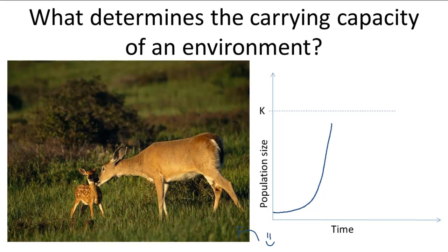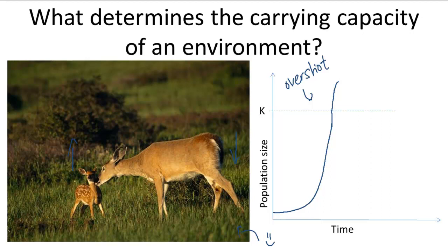At first, it's all good. But sooner or later, this population starts to grow out of control because the birth rate is a lot higher than the death rate. So it keeps growing exponentially and grows beyond the carrying capacity. When it does that, it is said to have overshot. So the population of deer is overshooting.